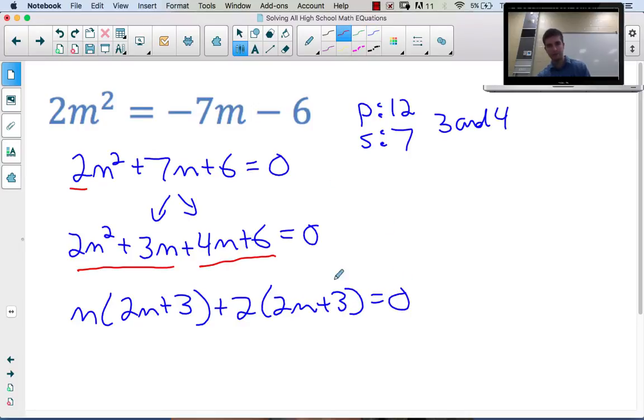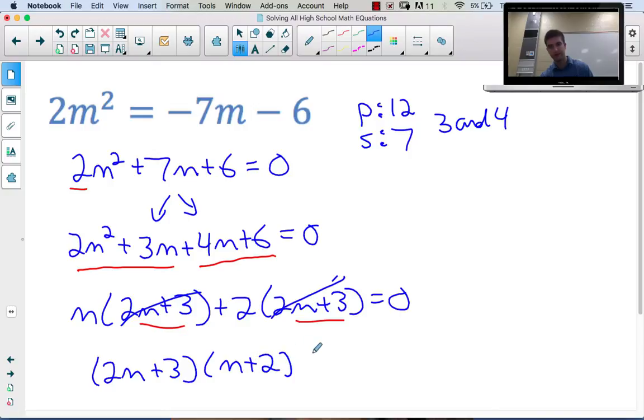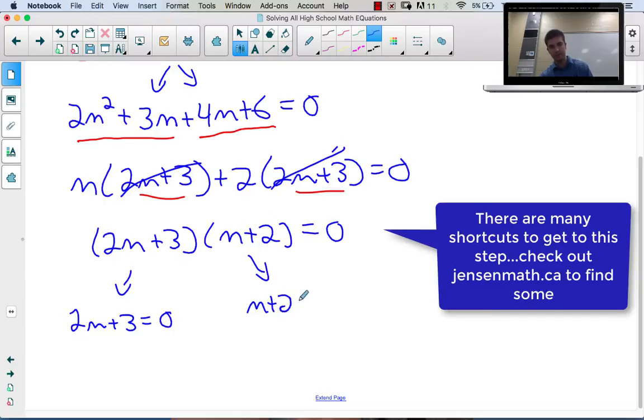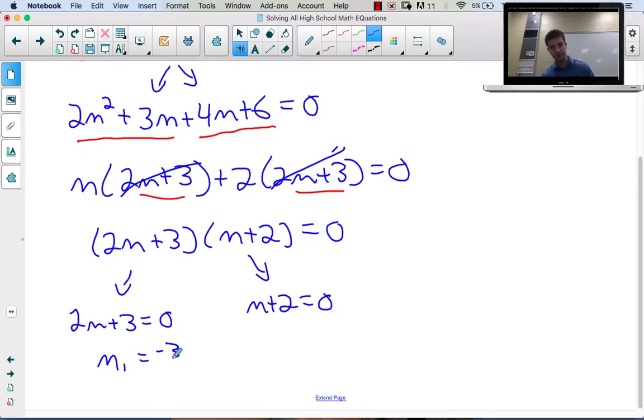Now it's been fully factored: (2m+3)(m+2) = 0. Set each factor to zero to figure out what would make the product be zero. Either this factor is zero or this factor is zero. So I have two answers: -3/2 is one possible answer, and -2 is the second possible answer.